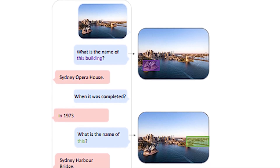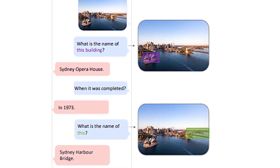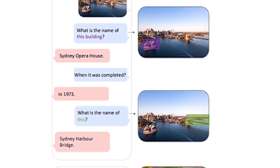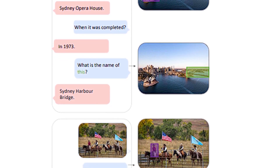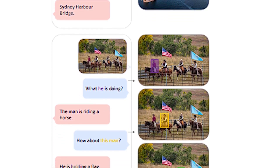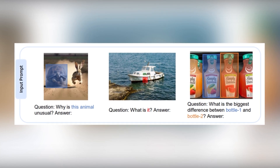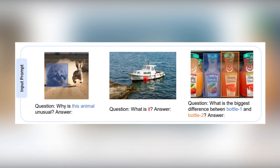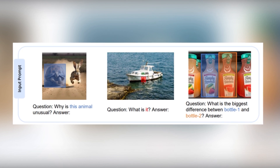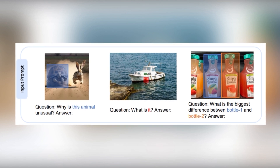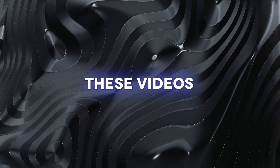Let's take a glimpse into some examples from the research paper. In one image with water and buildings, the question posed was: what is the name of the building? Astonishingly, Cosmos 2 not only accurately identified the building, but also provided answers to all related questions about it. Another picture showcased different bottles, and the question posed was: what is the difference between bottle 1 and bottle 2? Cosmos 2 quickly responded by highlighting the key distinction between the two bottles — the label.